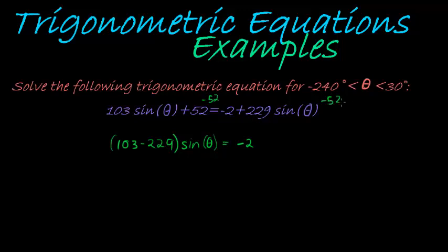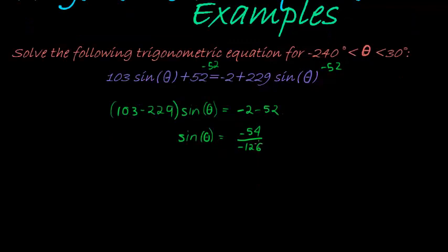On the right hand side, I had a negative 2 to get rid of the 52 on the left side. I just subtract that on both sides, and therefore I get 2 minus 52. So that in the end, I have that sin(θ) is equal to negative 54 over 103 minus 229, which gives me negative 126. And there's no need for simplifying.